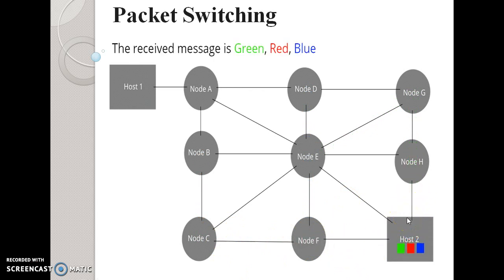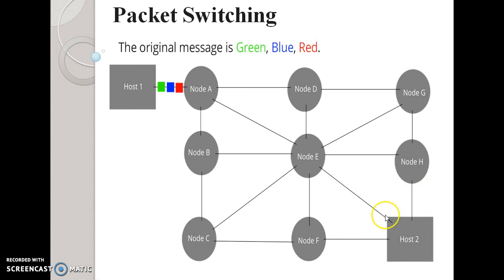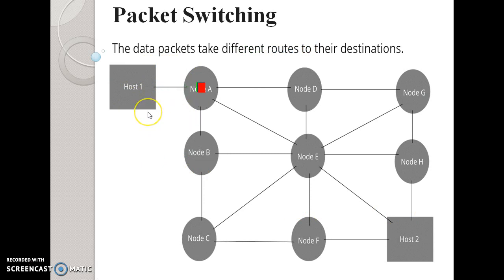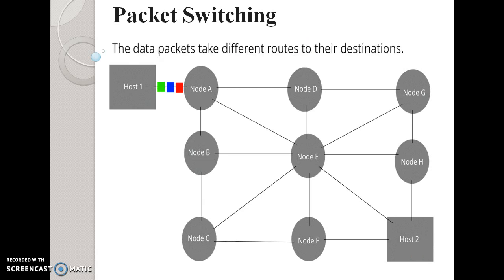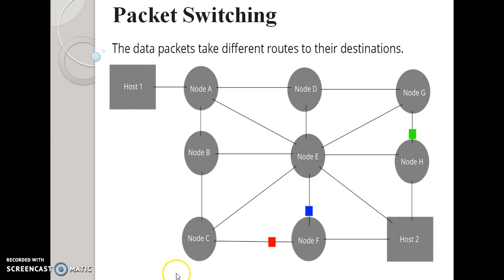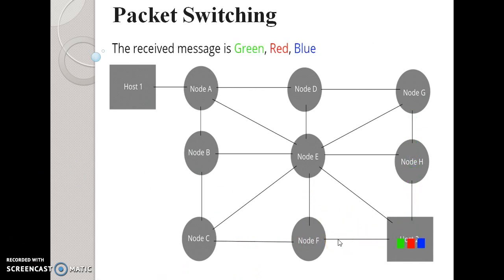If the sender has a longer message to send, it is broken into a series of packets. For example, 10 MB of data is converted into 1000-byte packets and then sent to the destination. Each packet contains user data and some control information indicating which path to take to reach the destination. Control information includes the destination address indicating where to deliver the data.